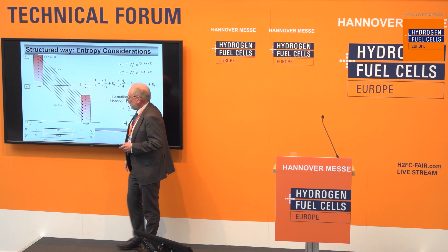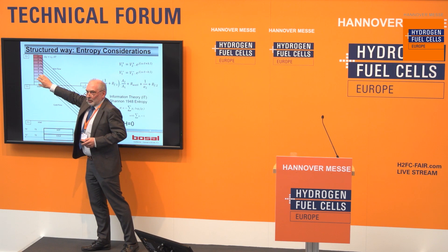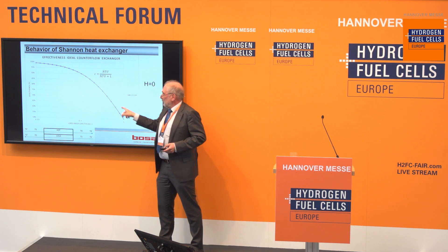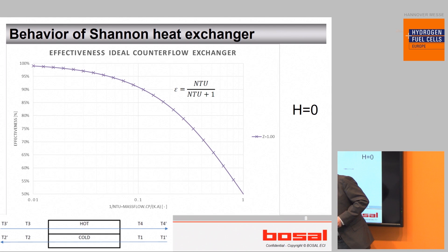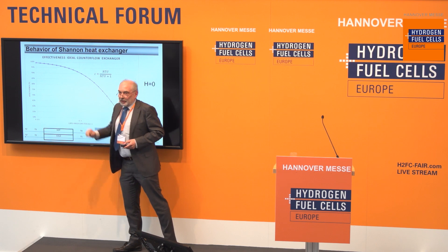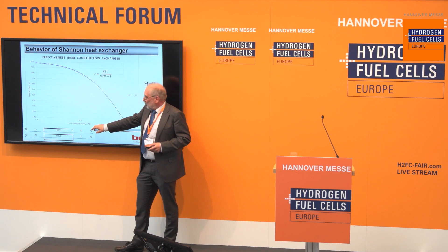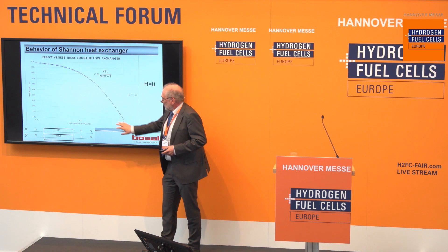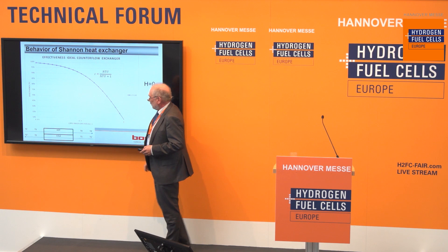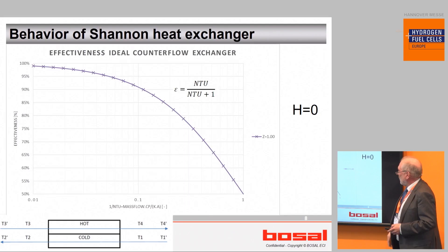If we select only two units and you have one here, then you have 50 percent effectiveness. If you calculate that, you see this type of curve: with one transferred unit you have 50 percent effectiveness, with nine you have 90 percent. Here, the reciprocal value of NTU is in fact proportional to the mass flow — a small heat exchanger with a big mass flow versus a big heat exchanger with a small mass flow. And all of this is with entropy zero.